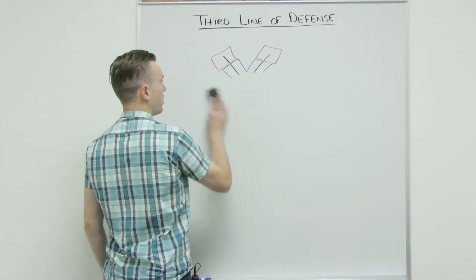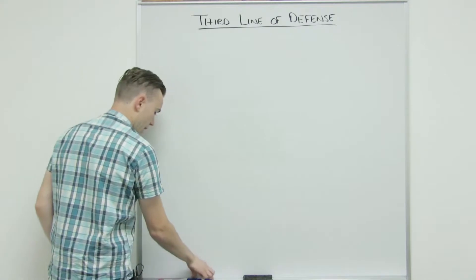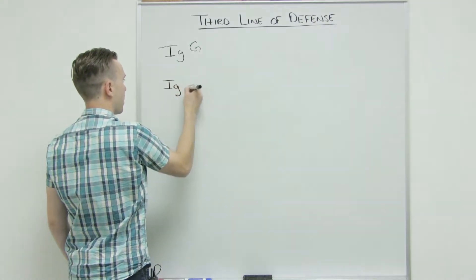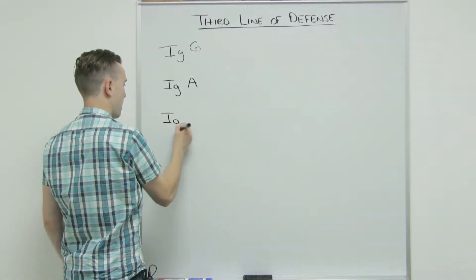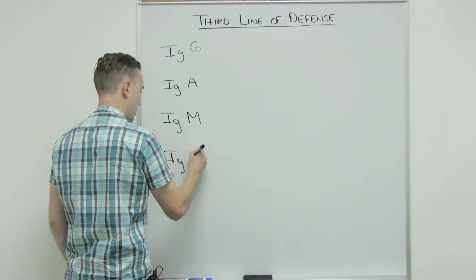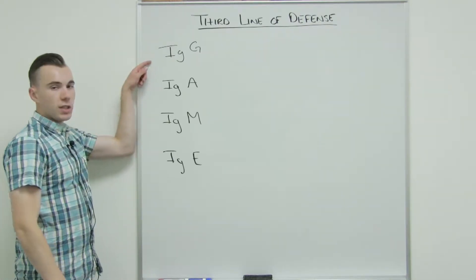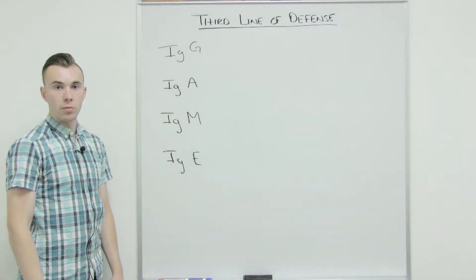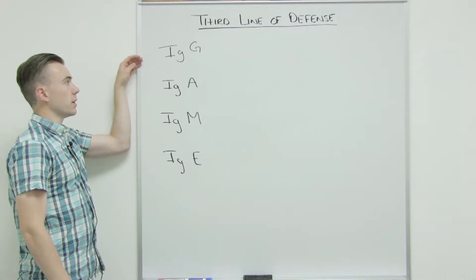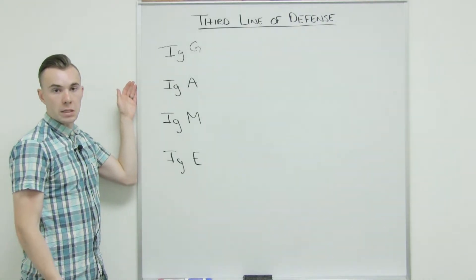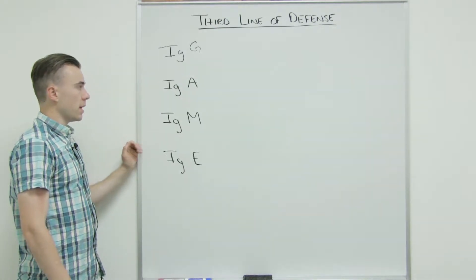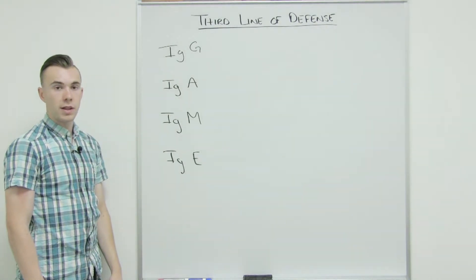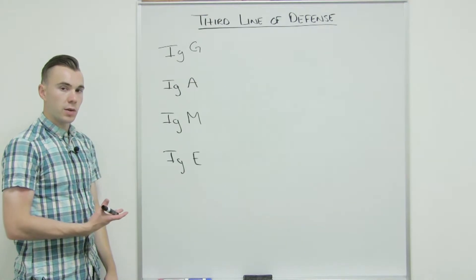We have four different types of antibodies: IgG, IgA, IgM, and IgE. Ig stands for immunoglobulin — the official term for the antibody protein is an immunoglobulin protein, though we abbreviate it as Ig and commonly call them antibodies. A helpful acronym to memorize these four antibodies is GAME — G-A-M-E. There are different aspects you need to understand with these four antibodies.